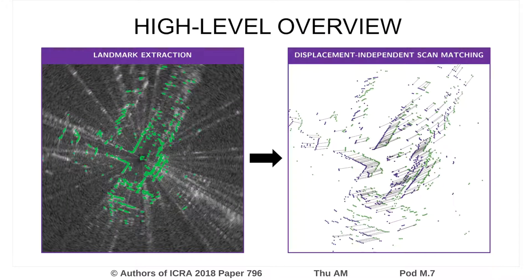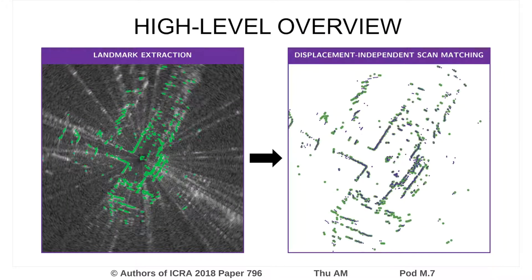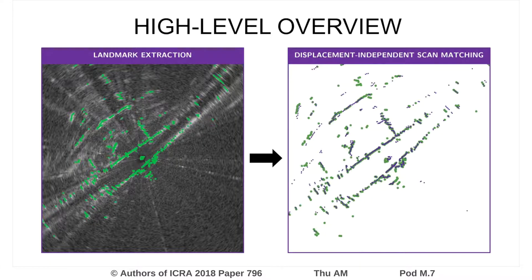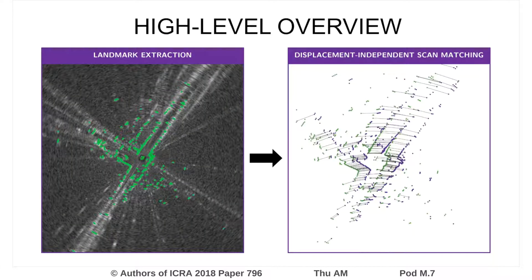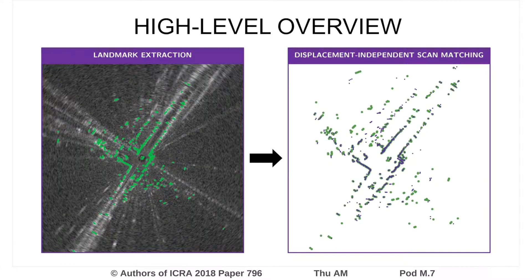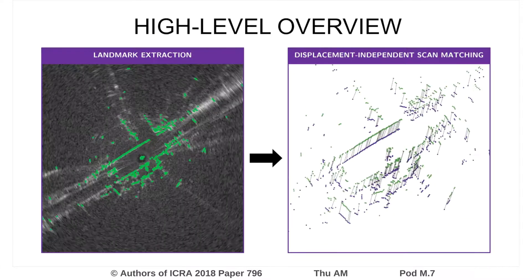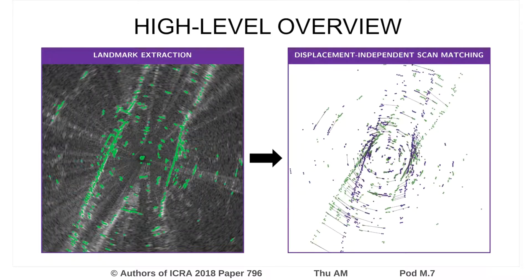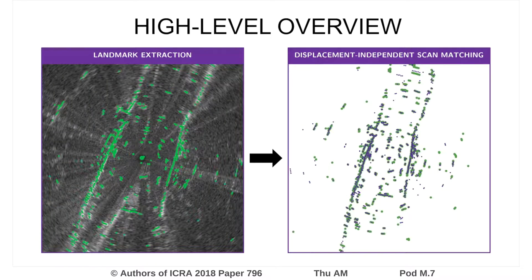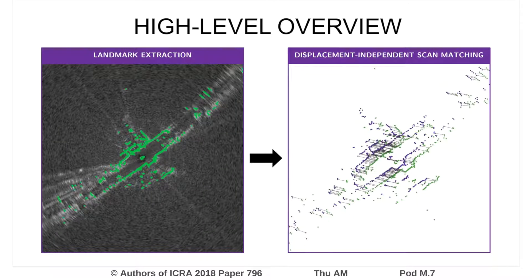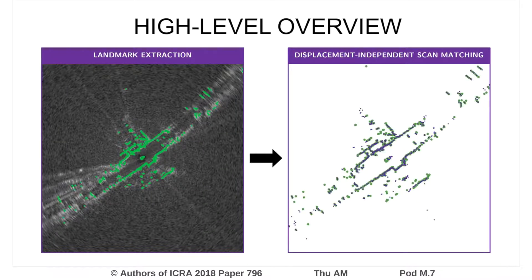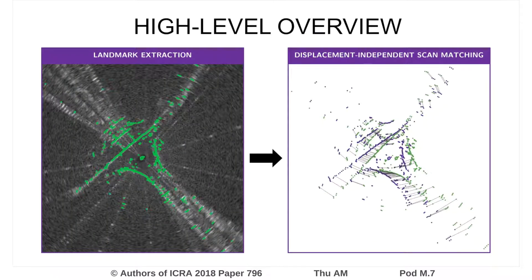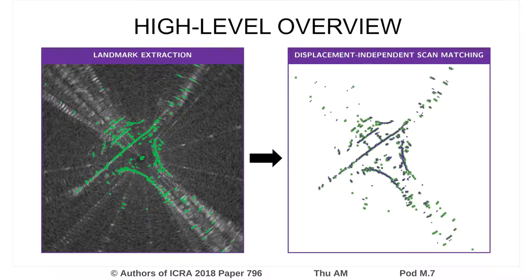At a high level, our method first performs clean and accurate landmark extraction, as shown on the left. The resulting point clouds, which can be separated by any displacement given sufficient scene overlap, are matched, then aligned, as shown on the right. The rigid body motion is estimated from this alignment.